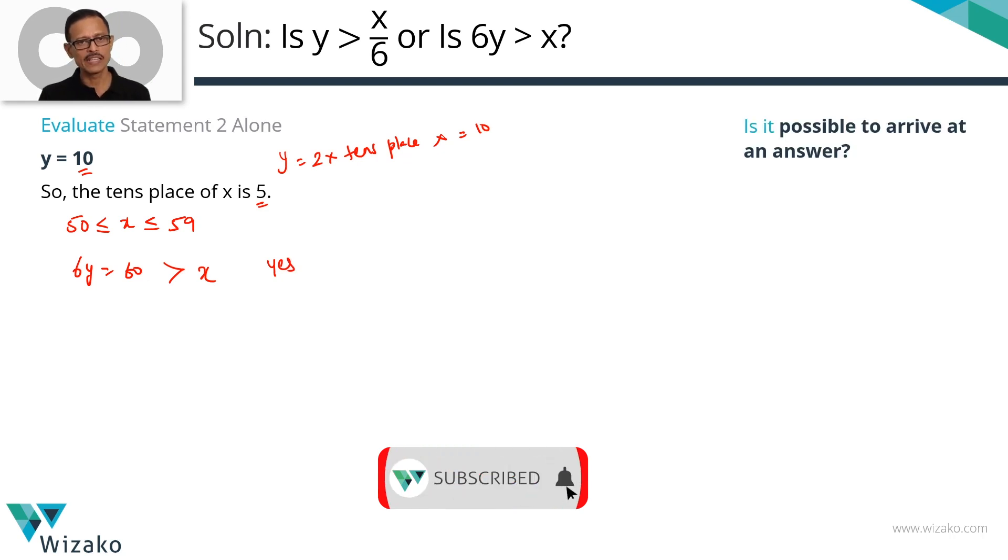So from statement 2 alone, we've been able to answer. At the end of evaluating statement 1, we eliminated answer options A and D. We were down to B, C or E. We said we'll evaluate statement 2 to determine whether it is B or if required, we'll combine it. Statement 2 alone is sufficient. So choice B is the answer to the question.